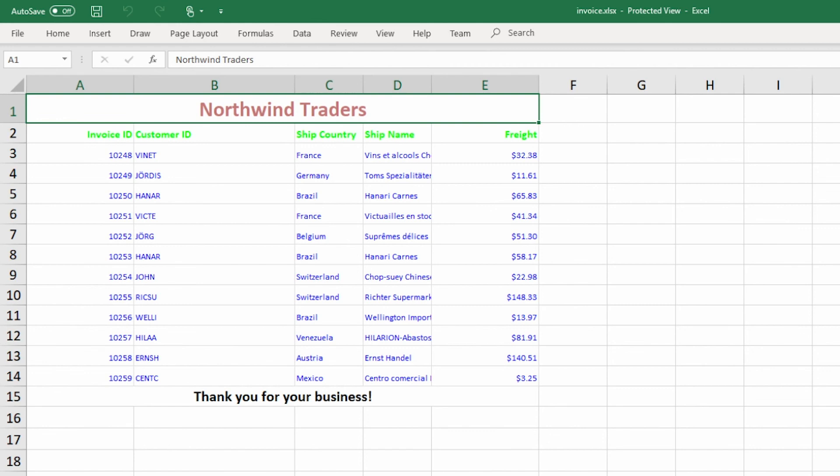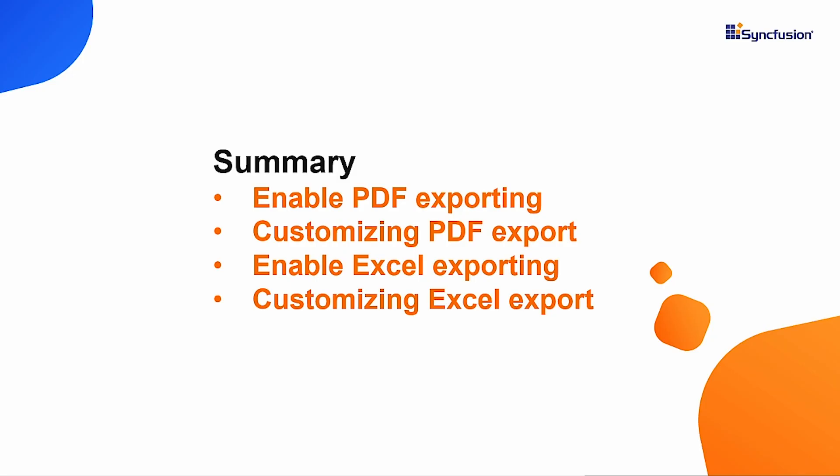To learn more about customization options, please visit our documentation page through the link in the description below. To summarize this video: we first saw how to enable PDF exporting in the data grid component and export grid data to a PDF document. Next, we saw the different customization options available in the PDF export. Then we saw how to enable Excel export in the data grid component and export the grid data to an Excel document. Finally, we saw the different customization options available in the Excel export.